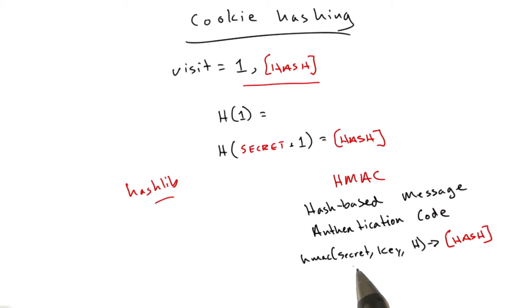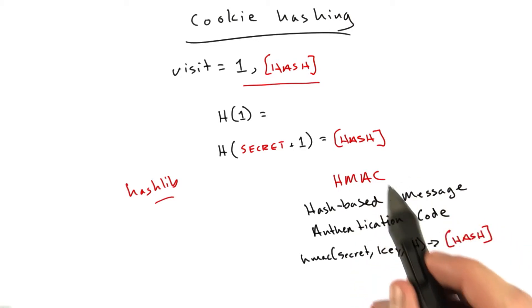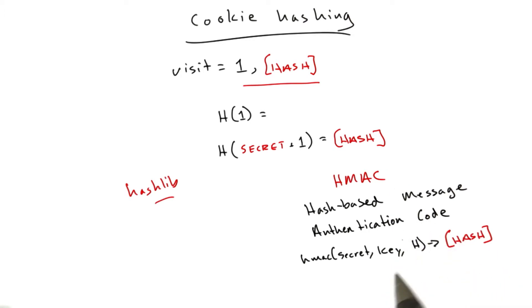Again, you can learn more about HMAC on Wikipedia or something. There's a wealth of information on what the algorithm actually is. But it's basically a special way of using a particular hashing function with a secret key. I'll show you that real quick in Python, how we use it.